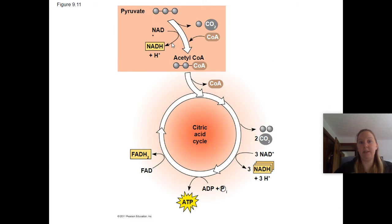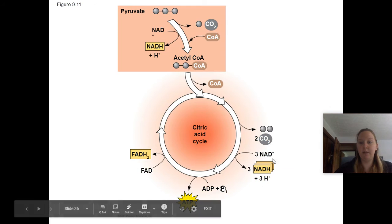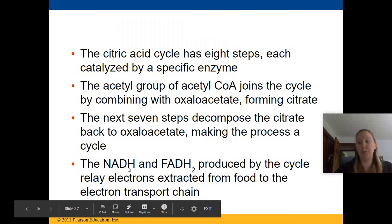Pyruvate comes in, becomes acetyl-CoA, and enters the citric acid cycle. Each turn produces two molecules of carbon dioxide, three molecules of NADH, one molecule of ATP, and one FADH2.